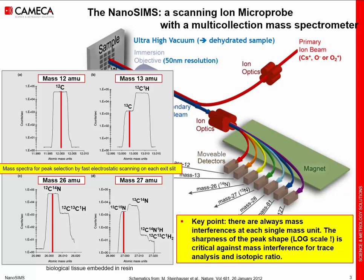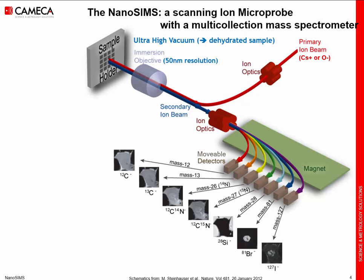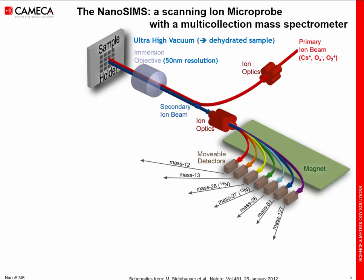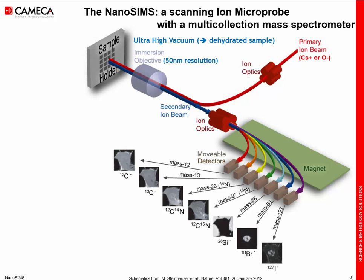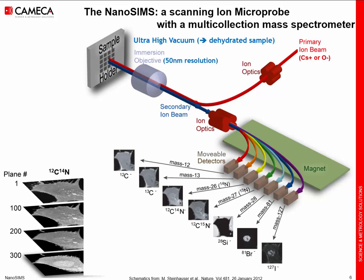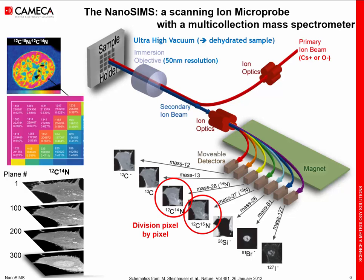The mass spectra are displayed in logarithmic scale on the Y axis, and you can see very sharp peak edges. Once that's done, we start to scan and record seven images in parallel. We can continue recording additional images, as the process is destructive — each image consumes a few nanometers, so we penetrate into the sample. At the end of the acquisition, we can divide one image by another to obtain an isotopic ratio image. So we obtain not only elemental maps but also isotopic ratios with high lateral resolution. On each pixel, you have the intensity of the first isotope, the intensity of the second isotope, and the isotopic ratio.